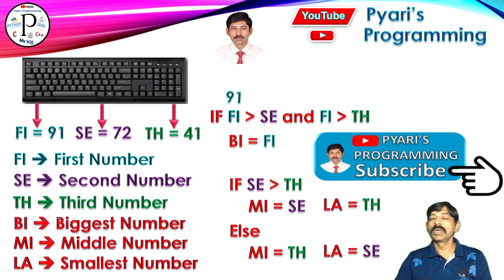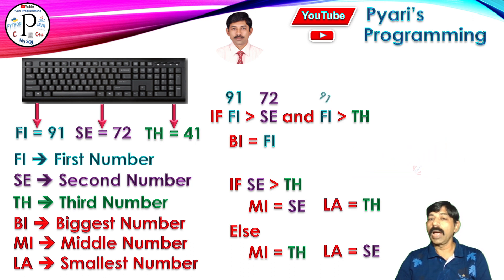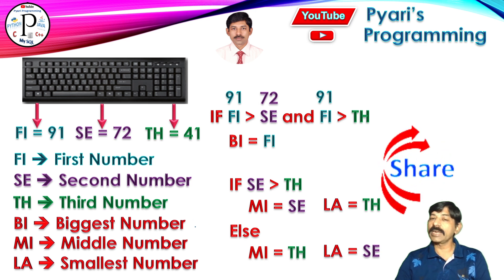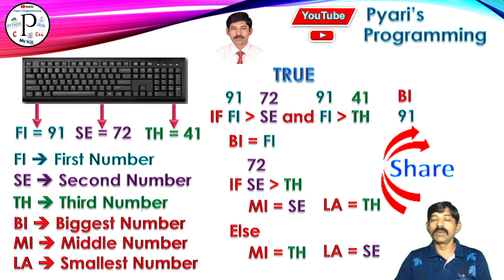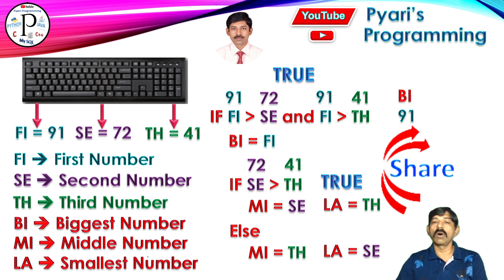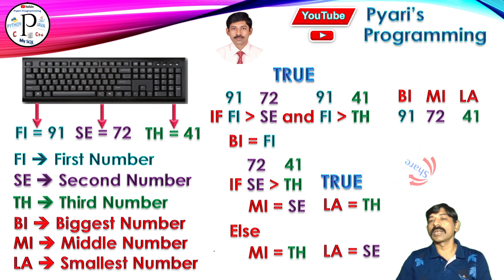Now let's take some values to check this. The user inputted: first is 91, second is 72. 91 is greater than 72 — true. I am using the AND operator, so I will check the second condition: 91 is greater than 41, since the third one is 41. Both conditions are true, so result is true. Biggest equals first — I assign the first number to the biggest. Then I find the second biggest: 72 greater than 41 — also true. So the middle number is the second one, which is 72. Obviously the last one is my third number, 41.